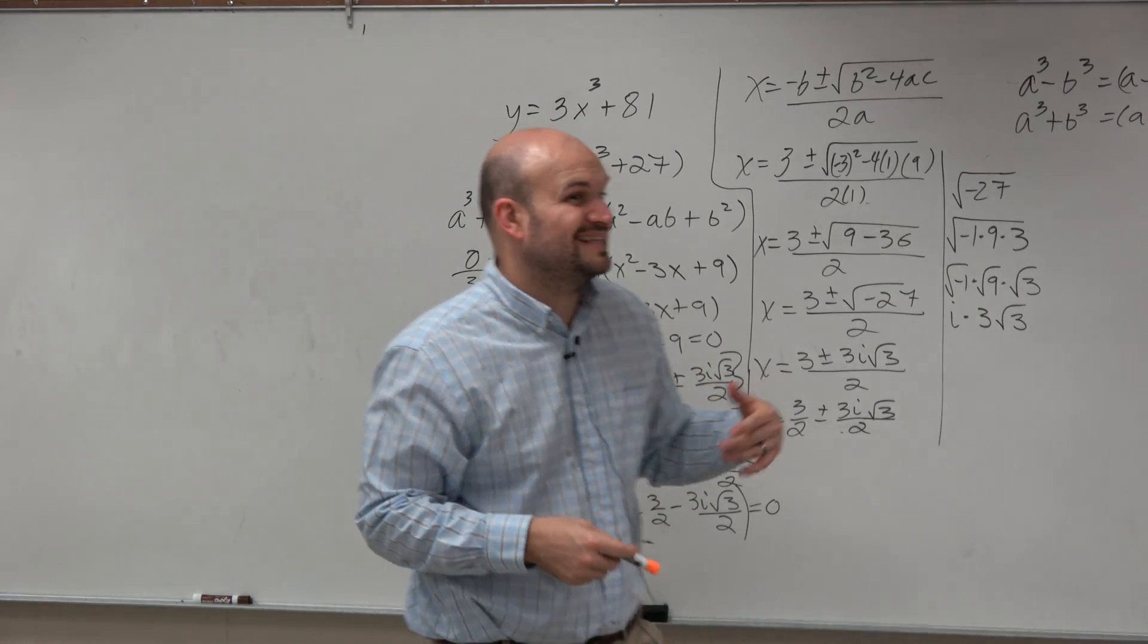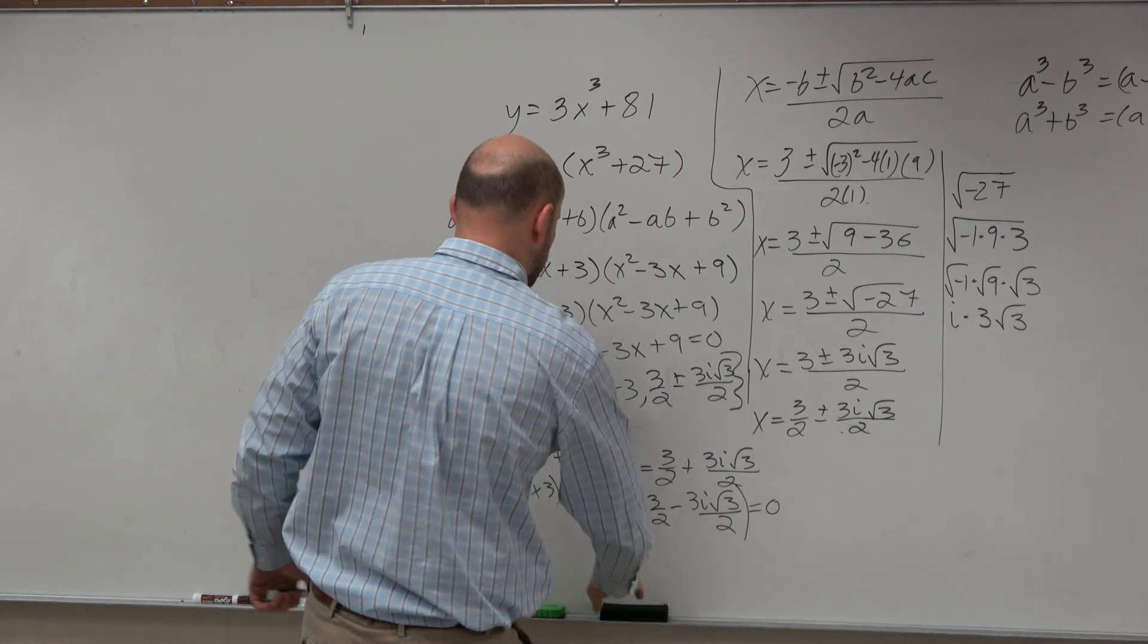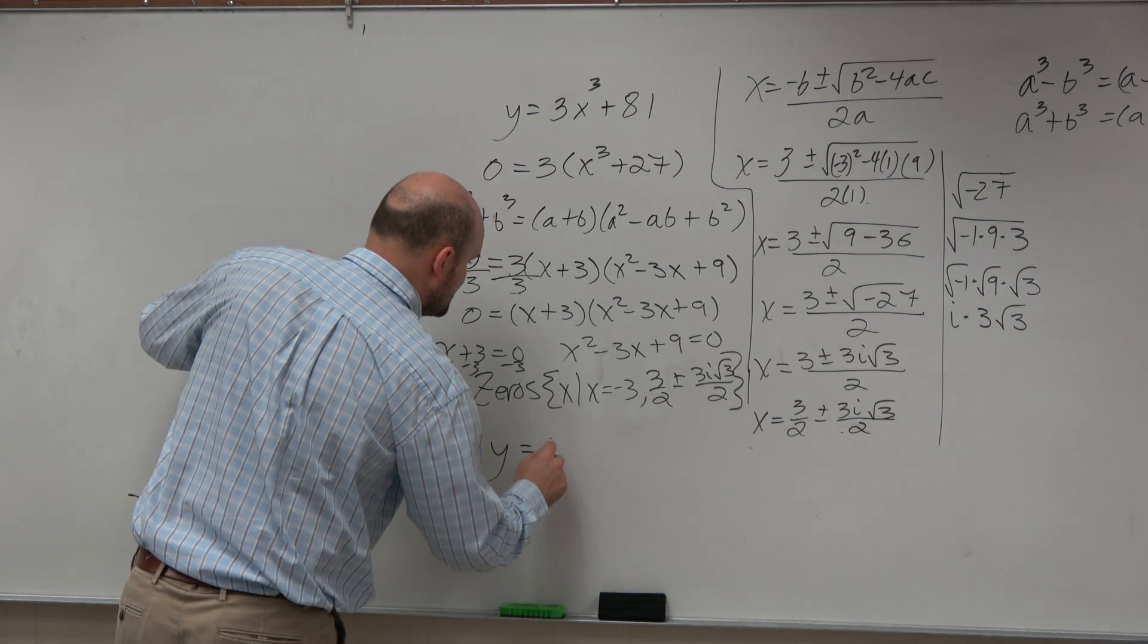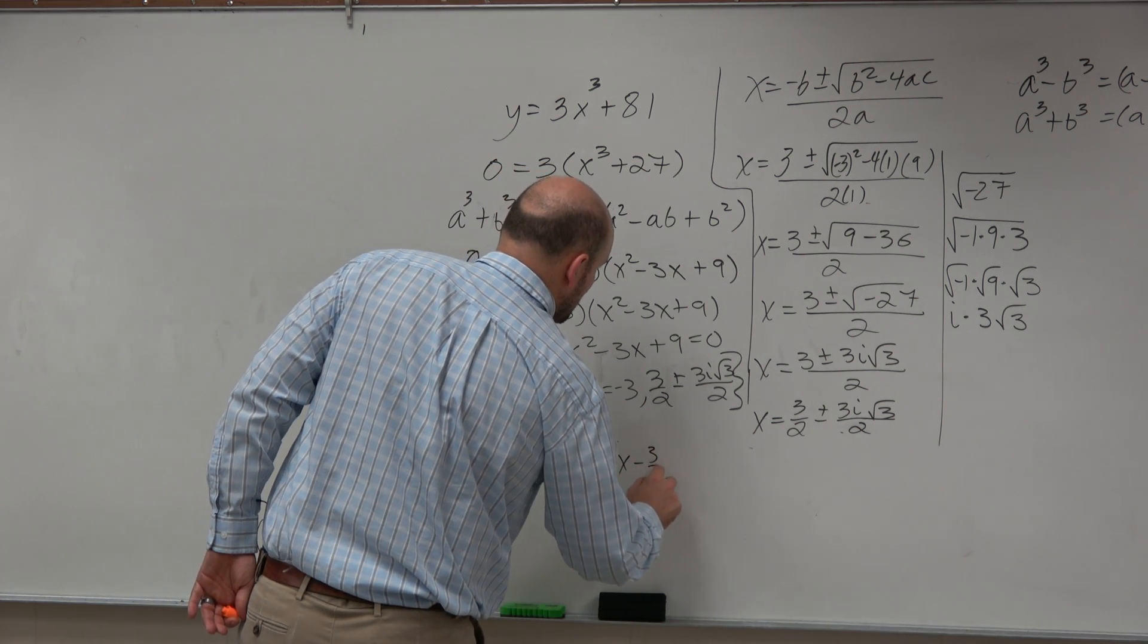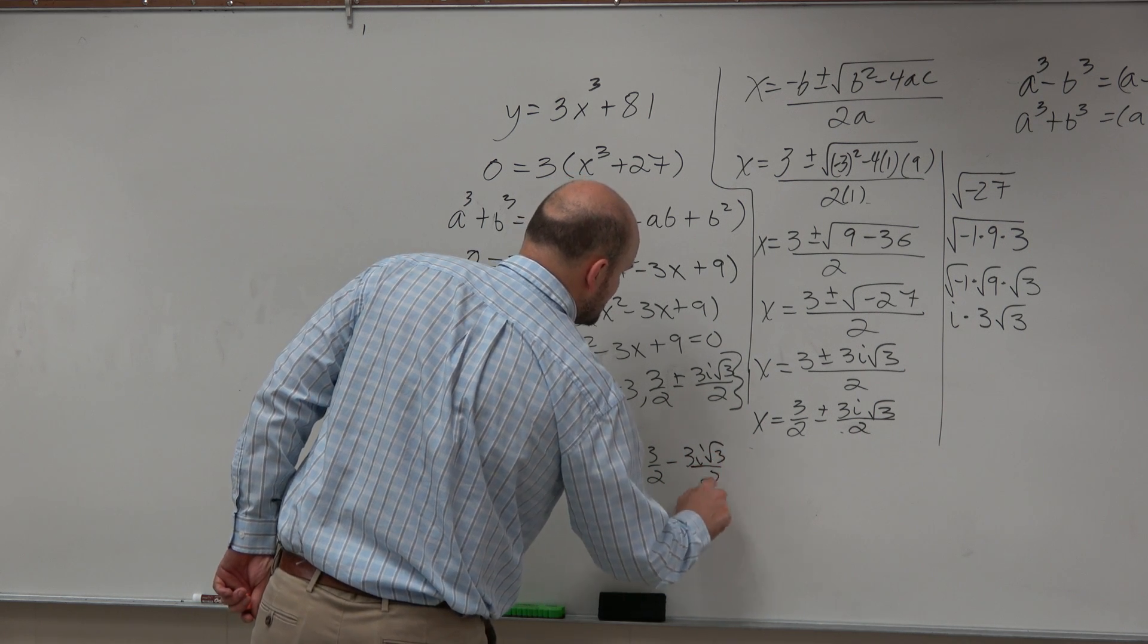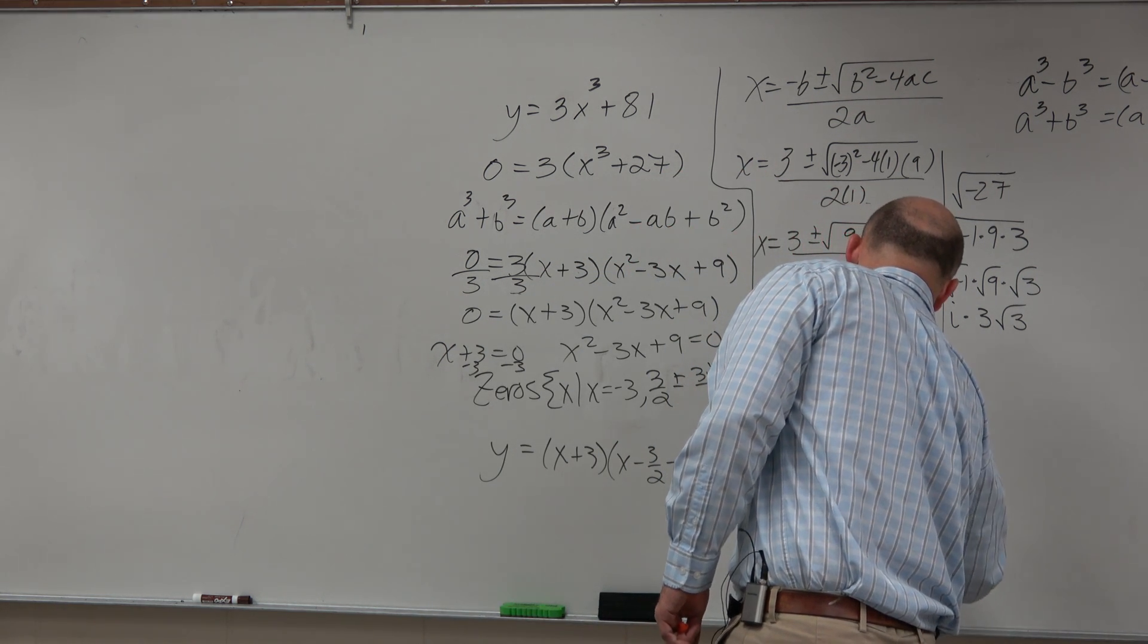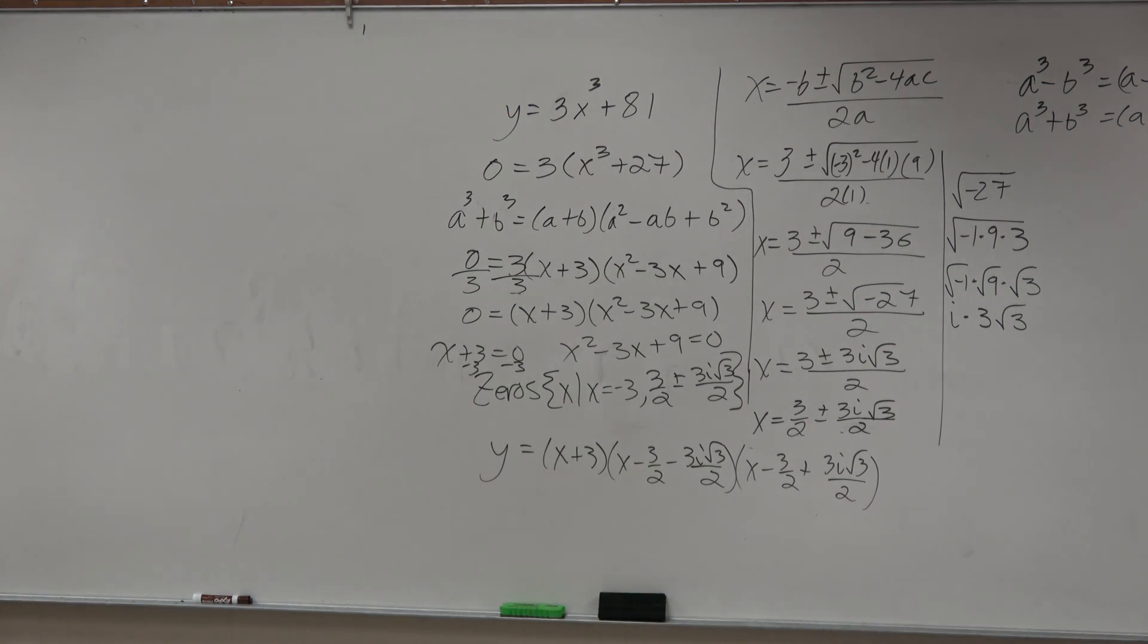So when I ask you to find the linear factorization of a problem like this, brain is like exploding. If I ask you to find the linear factorization, you're going to write y equals x plus 3 times x minus 3 halves minus 3i square root of 3 over 2, which I just wrote, times x minus 3 halves plus 3i square root of 3 over 2. This is the beautiful thing about this class.